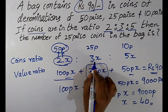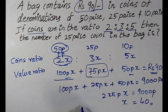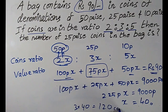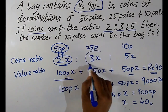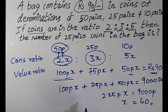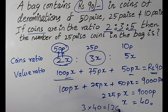Solving gives x = 40. Substituting x = 40 into 3x gives the number of 25 paise coins: 3 × 40 = 120 coins of 25 paise. That is the answer.